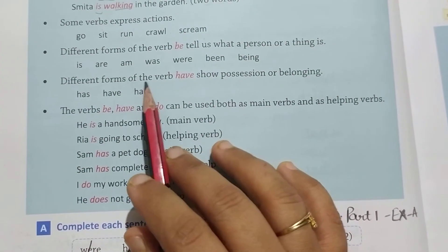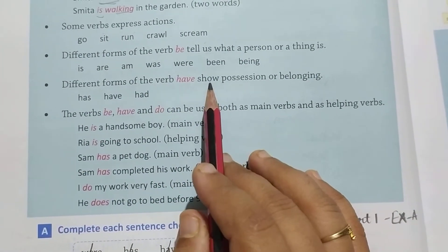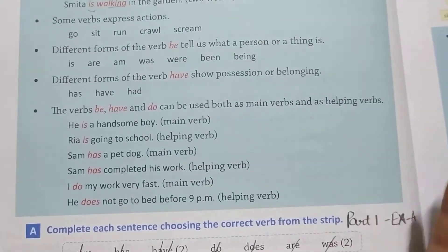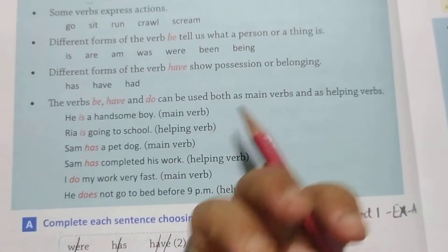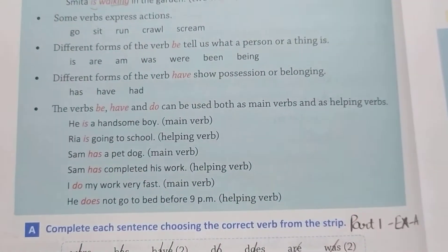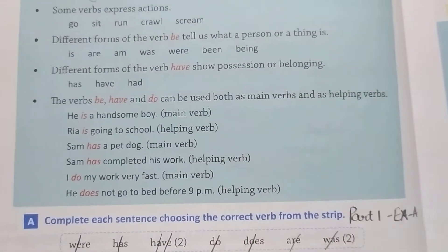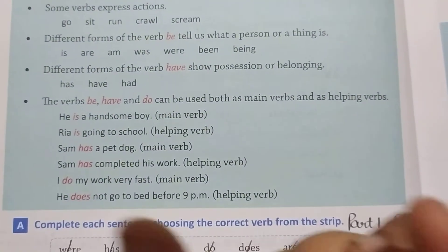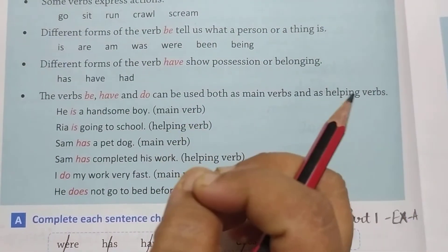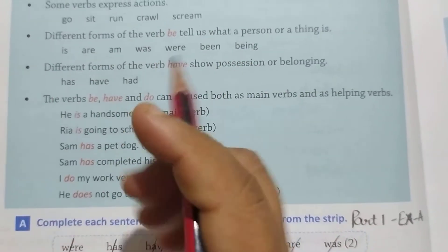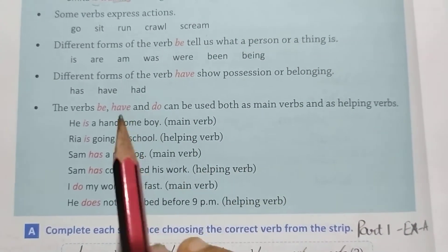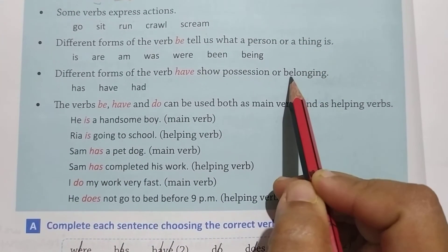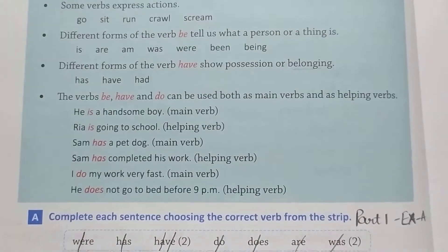Different forms of the verb 'have' show possession or belonging. Jaise have, has, had — jo hummare possession ko batate hain, matlab humari cheez. Jaise 'I have a book' — matlab mere paas ek book hai. Wo book ka possession kiske paas hai, wo 'have' se define hota hai. Kai baar aise bhi verbs hote hain jo humari belongings batate hain.